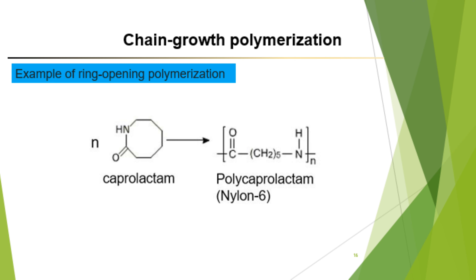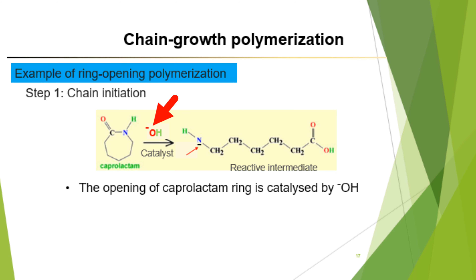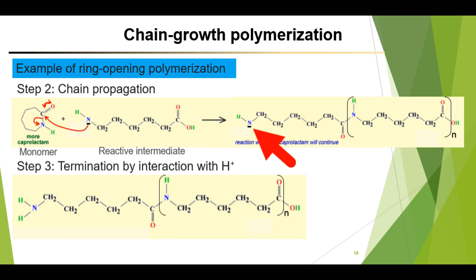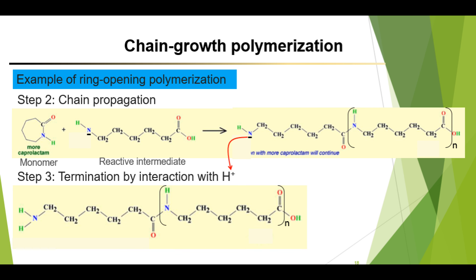For ring opening polymerization, using nylon 6,6 as an example: in chain initiation, the hydroxyl group acts as a catalyst to generate a reactive intermediate — the negatively charged amine group. In chain propagation, the reactive intermediate reacts with a monomer to generate a longer chain. For termination, the negatively charged amine group on the reactive intermediate can be terminated by adding protons into the solution, which is done by decreasing the pH by adding acid.